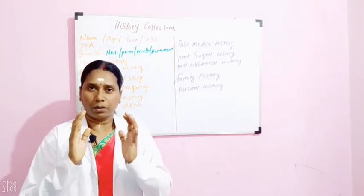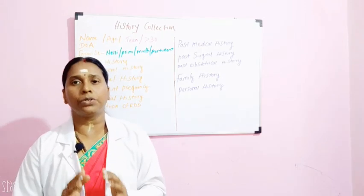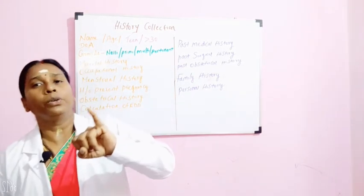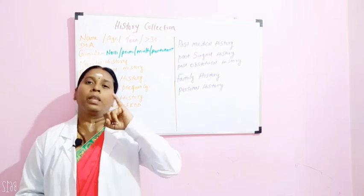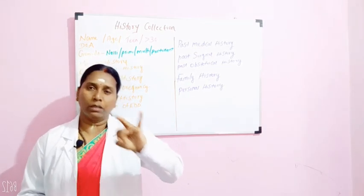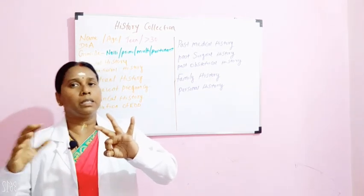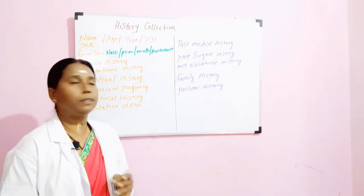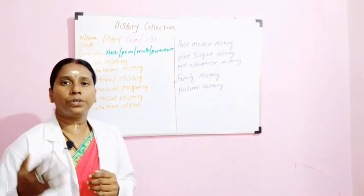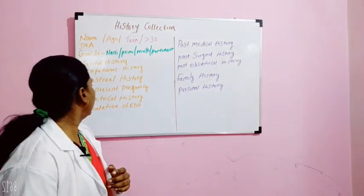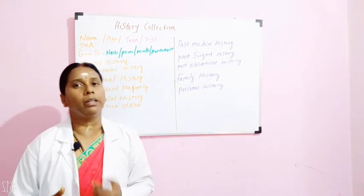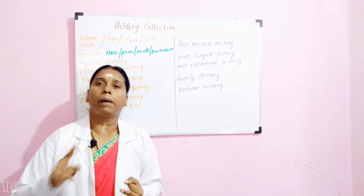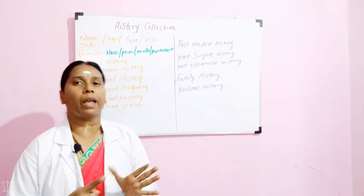So this is your rough idea when you are collecting history of an antenatal mother. You have to concentrate on all these areas: name of the mother, age, gravida (primi, multi, nulli), marital history, occupational history, menstrual history, history of the present pregnancy, obstetrical history, and the calculation of EDD. For past histories, you ask for past medical history, past surgical history, past obstetrical history, family history, and personal history.